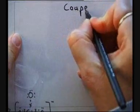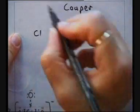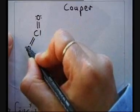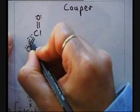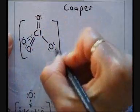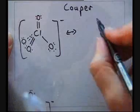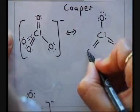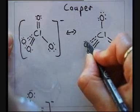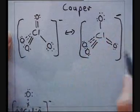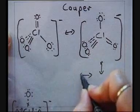We make use of Couper structures to write the molecular geometry. We have a central atom, Chlorine, and we draw the structure in three-dimensional space to represent the tetrahedral molecular geometry. Of course, we have four resonance structures, so we can write another structure accordingly, adding brackets and the charge. Two more resonance structures can also be written.